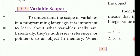To understand the scope of variables in programming languages, it is important to learn what variables really are. Essentially, variables are addresses to an object in memory — a reference pointing to a value stored in memory. We use a name as an instance, variable, or address.